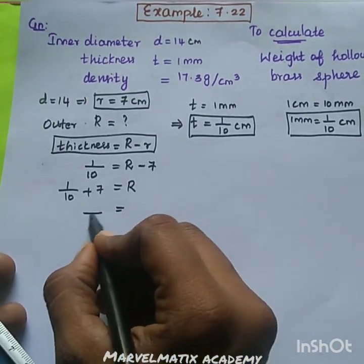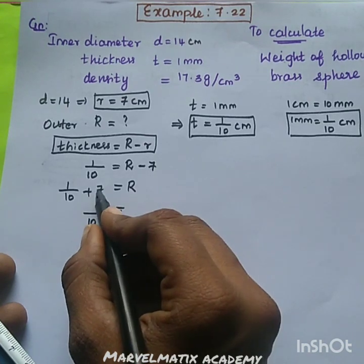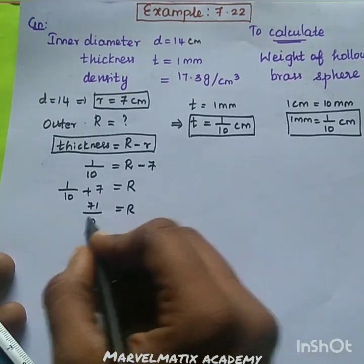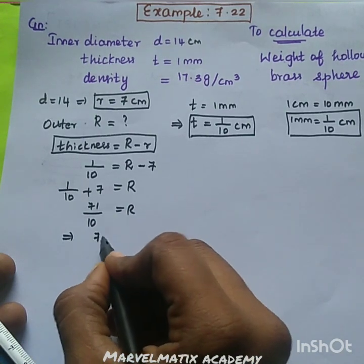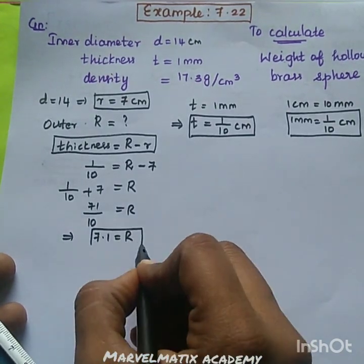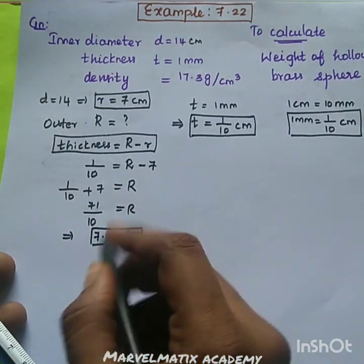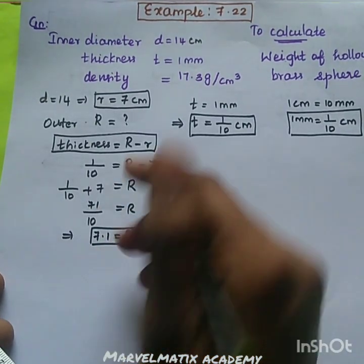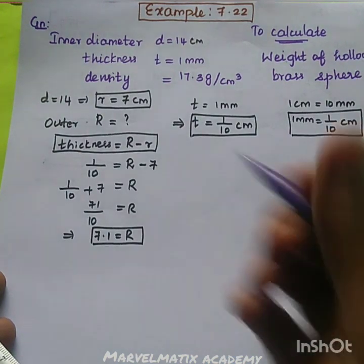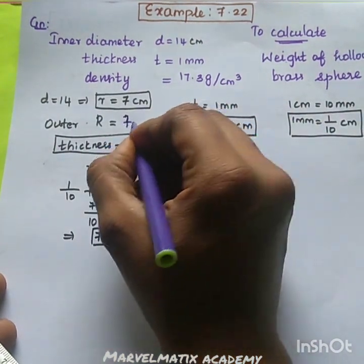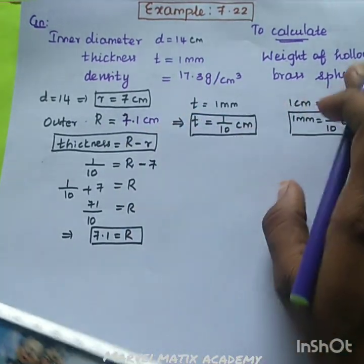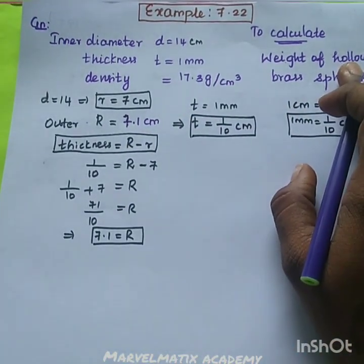So 70 plus 1 = 71, divided by 10, equals 7.1. So 7.1 is equal to the outer radius value — 7.1 cm. Ok, weight of the hollow brass sphere.